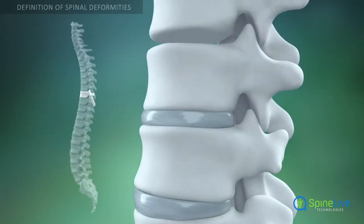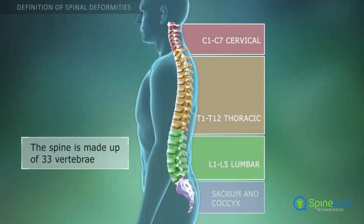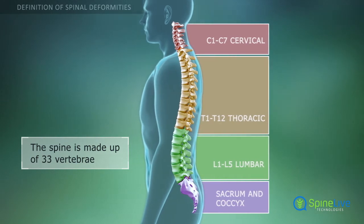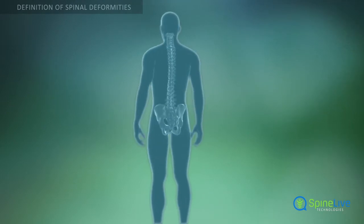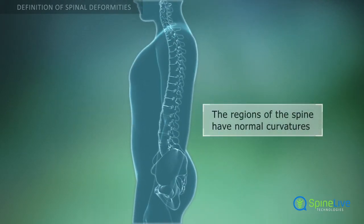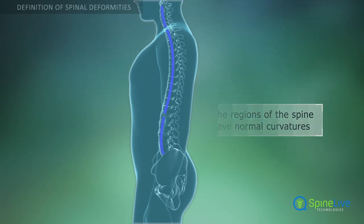The spine is made up of 33 individual bones called vertebrae. The vertebrae are numbered and divided into four regions. The normal spine is not a straight line when viewed from the side. The thoracic region has a normal forward curvature ranging from 20 to 50 degrees, and the lumbar and cervical regions have reverse curvatures.